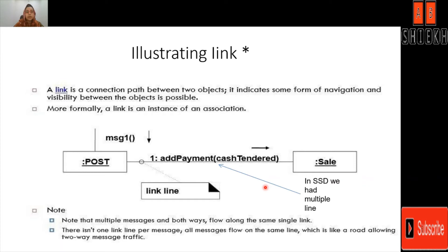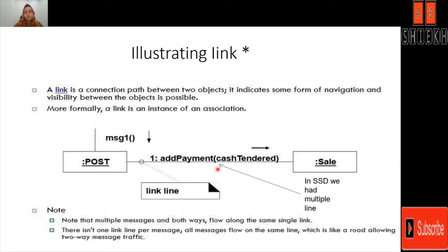In a system sequence diagram we had a whole sequence of a particular use case or method call, but in UML collaboration or communication diagram we represent the sequence by numbering them — one, two, three, four. The major difference between the SSD and the collaboration diagram is that in a collaboration diagram you can have multiple messages on a single link by representing their sequence numbers, whereas in SSD you have to have different lines for each message.